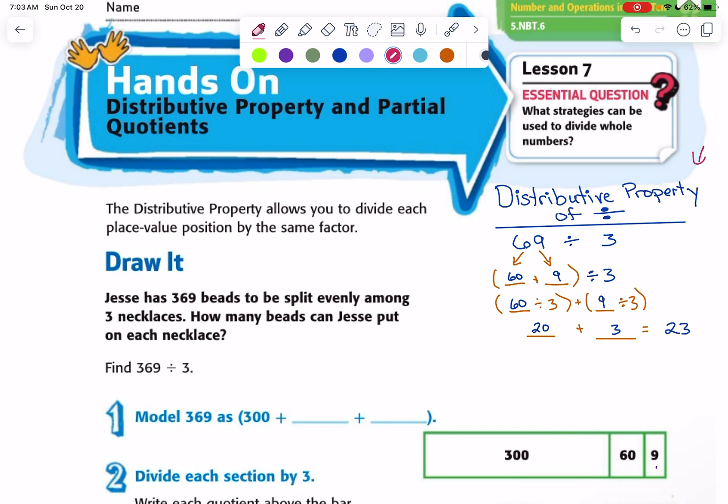So here is our example of the distributive property. As you can see here, they broke 69 up by its place values. 6 represents 60 and 9 is 9. Then they divided each place value by the divisor. So 60 divided by 3 is 20 and 9 divided by 3 is 3. Then you just add those together and you get the quotient of 69 divided by 3.